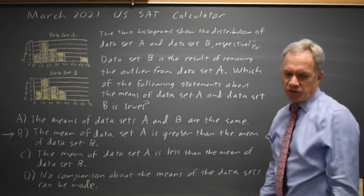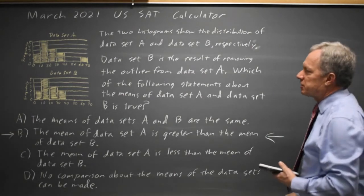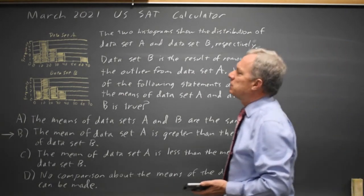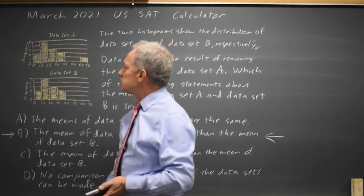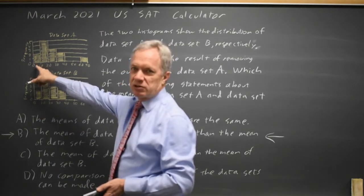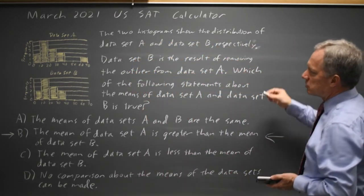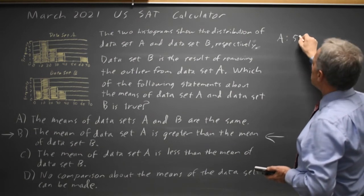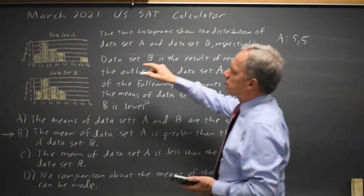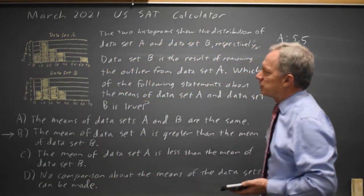Alternatively, we could figure this out using our graph or scientific calculator, or even by hand, by writing the values in each data set. Let's treat each value as if it's the midpoint of the interval — it won't matter as long as you choose fixed numbers. So data set A would be 5, 5, because it shows a frequency of two numbers between 0 and 10, so I'm calling them both 5.